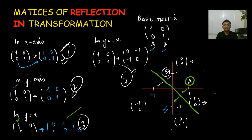There are only four matrices in reflection for transformation. We don't need to learn them by heart — this method is very simple. Whenever you need a matrix, you can find it in just five to ten seconds. Thank you so much, have a nice day. Please like and subscribe my channel and press the bell icon to receive new videos. Thank you, bye-bye.